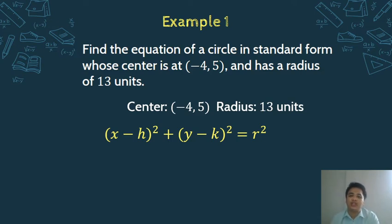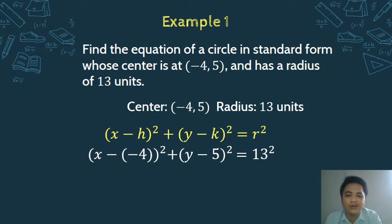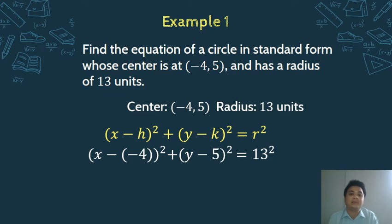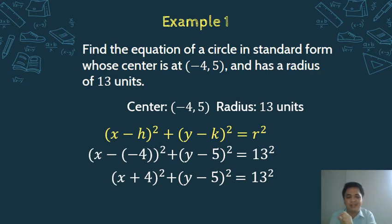Substitute the given values into the standard form. This will become: (x minus negative 4) squared plus (y minus 5) squared equals 13 squared. Notice there are two parentheses, so we simply apply the law of signs: negative times negative is positive. This becomes (x plus 4) squared plus (y minus 5) squared equals 13 squared.